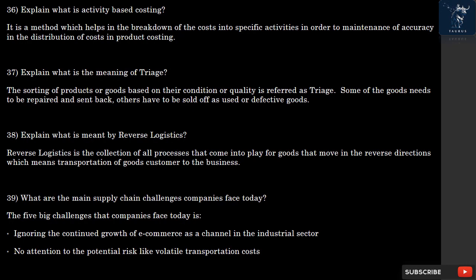Question 36: What is Activity-Based Costing? It is a method that helps in breaking down costs into specific activities in order to maintain accuracy in the distribution of costs in product costing. Question 37: What is the meaning of Triage? The sorting of products or goods based on their condition or quality is referred to as Triage. Some goods need to be repaired and sent back; others have to be sold off as used or defective goods.